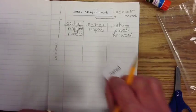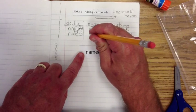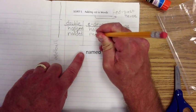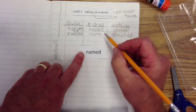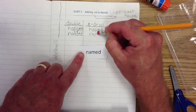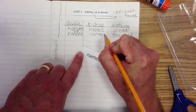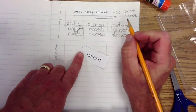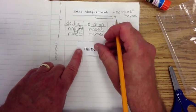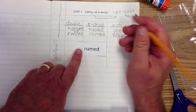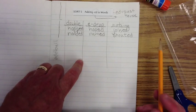Let's sneak in an E-drop word like NAMED. What's the base word? NAME. But to make it past tense, we have to get rid of this E, and then we add ED, which makes it past tense — like 'they named their baby boy Billy.' They named their child — past tense, it happened many years ago. Let's go back through it real quick.